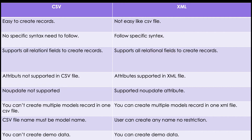In the CSV side, there is no concept of attributes, so whatever attributes are supported by XML you cannot use in CSV — that's a disadvantage. On the XML side, one major attribute is the `noupdate` attribute, which is very useful. For example, if a developer needs to upgrade the module frequently, it will not reload all the records — it will ignore that XML file on upgrade. That's a main advantage not available in CSV.